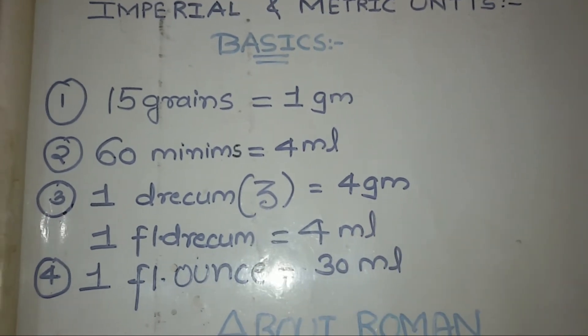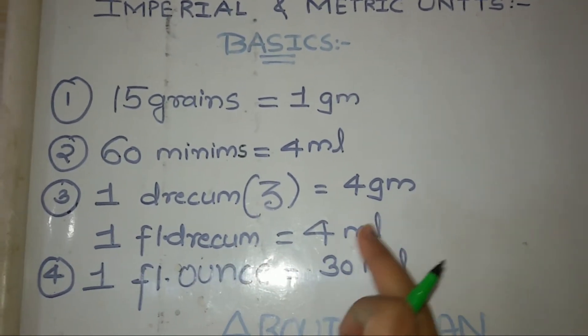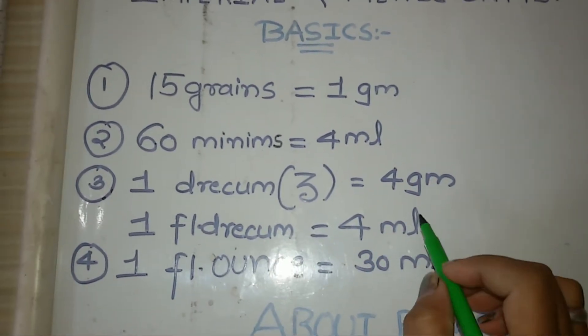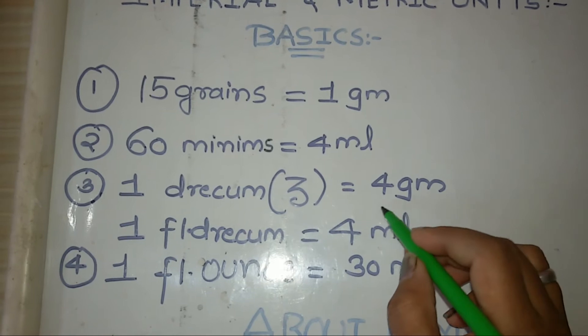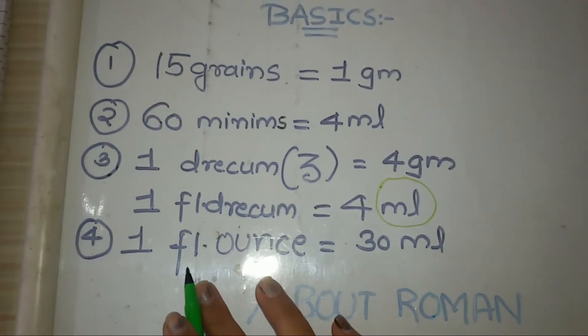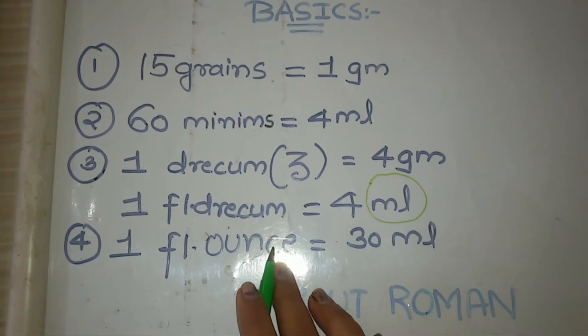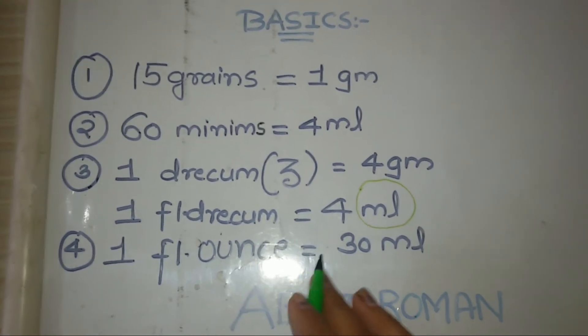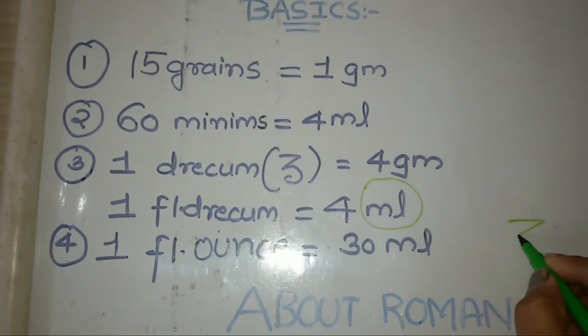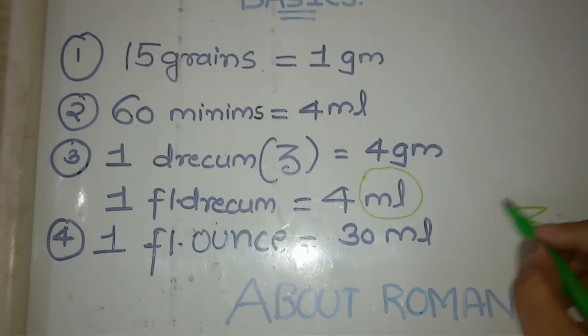Whereas one fluid drachm is equal to 4 ml. Fluid means the capacity is always in ml. While one fluid ounce is equal to 30 ml, and the symbol of fluid ounce is this.